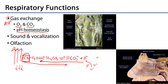The respiratory system is also important for the production of sound and vocalization. This is largely a function of the larynx, and there are other features along that pathway which help shape that sound. Finally, along the superior portion of the nasal cavity, there is respiratory epithelium rich with olfactory nerves, so olfaction is another function of the respiratory system.